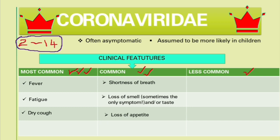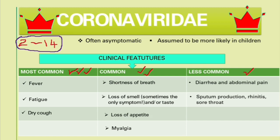Other common symptoms include loss of appetite and myalgia — muscle pain or general discomfort. Less common symptoms include GIT symptoms like diarrhea and abdominal pain, as well as sputum production, rhinitis, and sore throat.